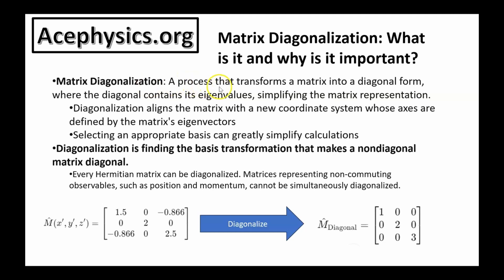Matrix diagonalization is a process that transforms a matrix into its diagonal form. Diagonalization aligns the matrix with a new coordinate system whose axes are defined by the matrix's eigenvectors. This is the key point: diagonalization is finding the basis transformation that makes a non-diagonal matrix diagonal. Matrices representing non-commuting observables such as position and momentum cannot be simultaneously diagonalized — the laws of physics dictate you can't know both with arbitrary accuracy, which is why those observables can't be simultaneously diagonalized.